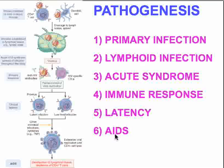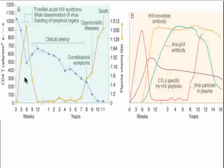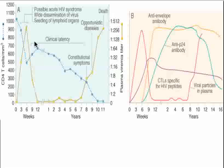What we call AIDS is at the very end of the pathogenesis. Here's a diagram showing the primary infection, the lymphoid infection, the acute syndrome, the latency, and full-blown AIDS. Looking at this graphically, the dotted blue line representing clinical latency shows that from about six weeks after the acute syndrome, there is a period averaging about seven or eight years before the rise of clinical symptoms resulting in opportunistic infections and then often death.